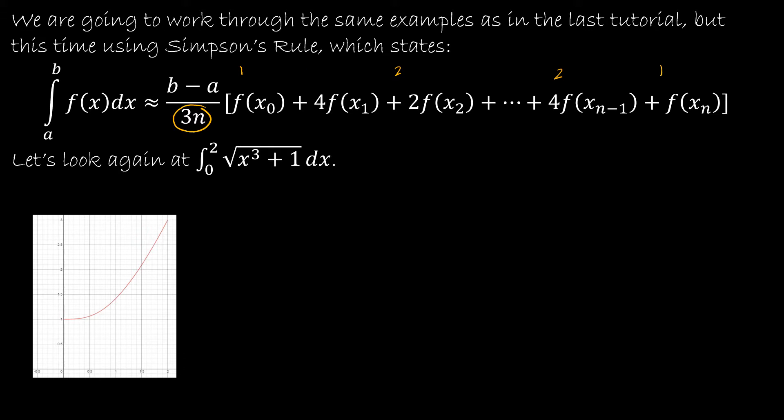So it's going to alternate with 4 and 2, and then of course still end with 1. But really the rest of it is exactly the same as what we've done. We're still going to look at a and b in the same way and look at delta x in the same way. So let's take a look.